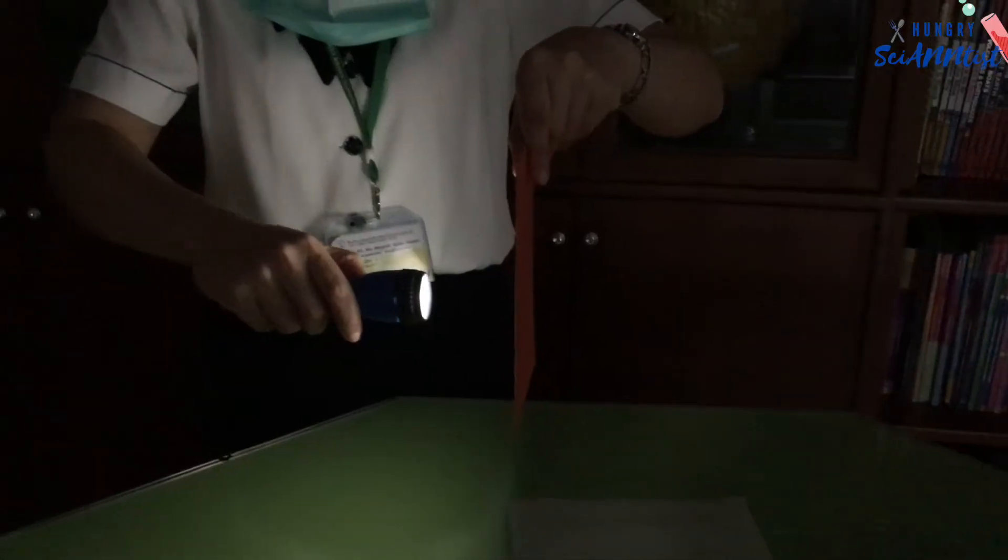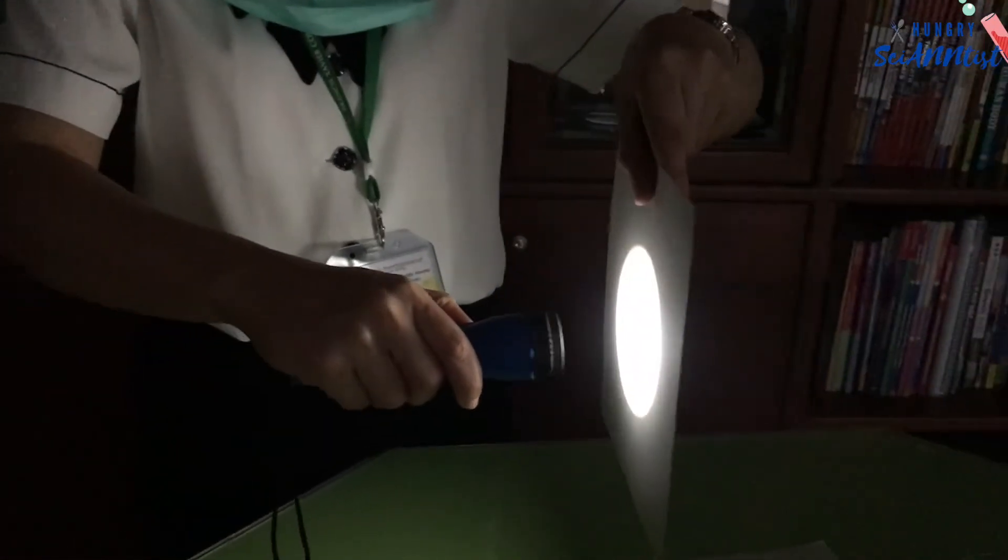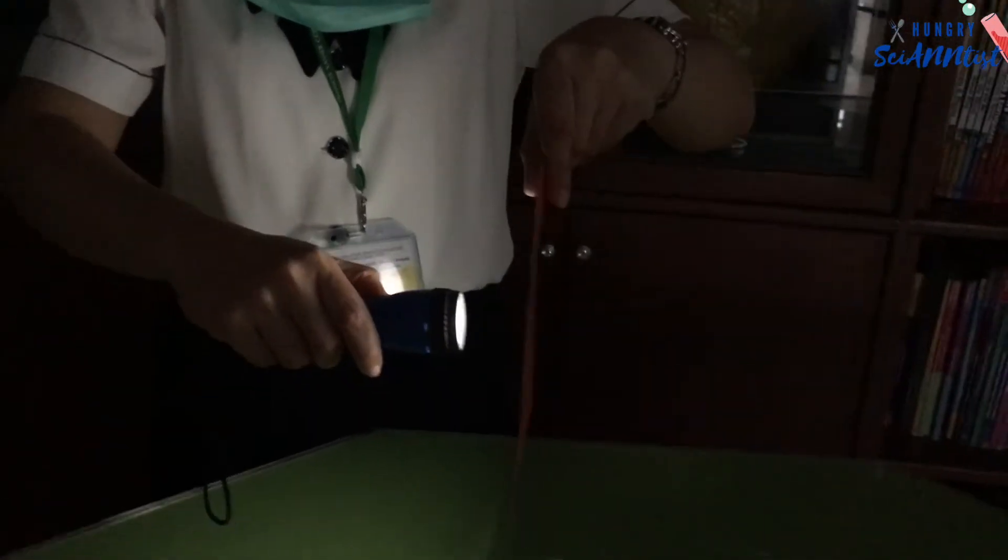Opaque objects cast dark shadows as they block light completely.